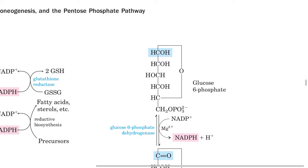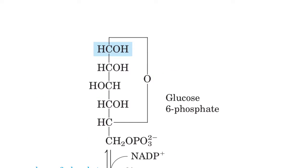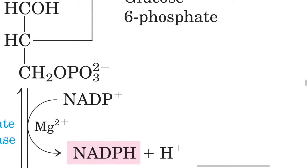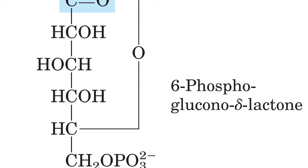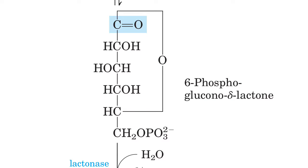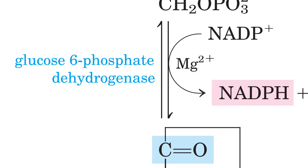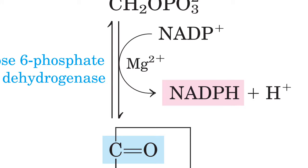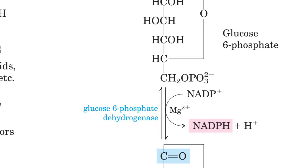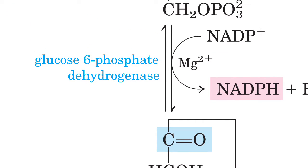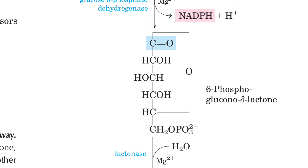Now we start with the oxidative phase of the pentose phosphate pathway. Glucose-6-phosphate is generated by a hexokinase reaction, where glucose is phosphorylated at the 6th position using one molecule of ATP. This glucose-6-phosphate — which can also be used in glycolysis — enters the pentose phosphate pathway and is converted into 6-phosphoglucono-delta-lactone. This conversion is catalyzed by the enzyme glucose-6-phosphate dehydrogenase, which uses Mg²⁺ as a cofactor, and NADP+ is reduced to NADPH + H⁺.